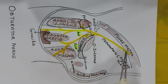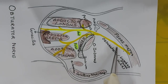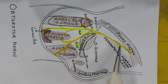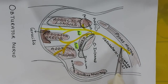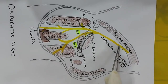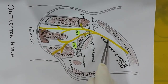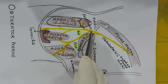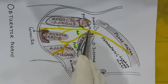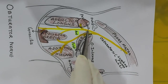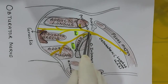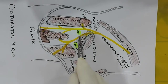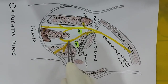The obturator nerve arises from the lumbar plexus, just medial to the psoas major muscle, and enters the thigh through the obturator canal, where it divides into an anterior and a posterior division.